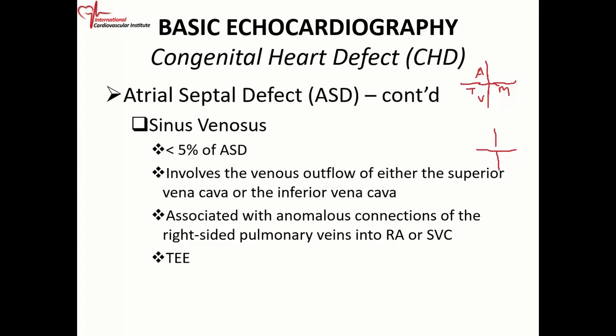The sinus venosus defect, which is in the uppermost or lowermost portion of the atrial septum, accounts for just less than 5% of ASDs. It can involve the venous outflow of either the superior or inferior vena cava. There is also something called scimitar syndrome. This type of defect is associated with anomalous pulmonary venous return — the right-sided pulmonary veins, which normally drain to the left atrium, instead drain into the right atrium or superior vena cava.